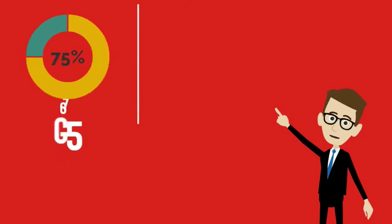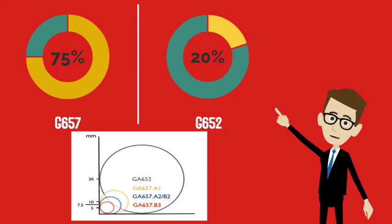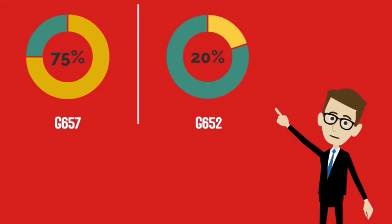So, what does this all mean when we compare the G657 products against the normal single-mode glass, G652? The below diagram shows each of the bend radii of the G657 products as compared to the bend radius of the G652's standard single-mode glass.